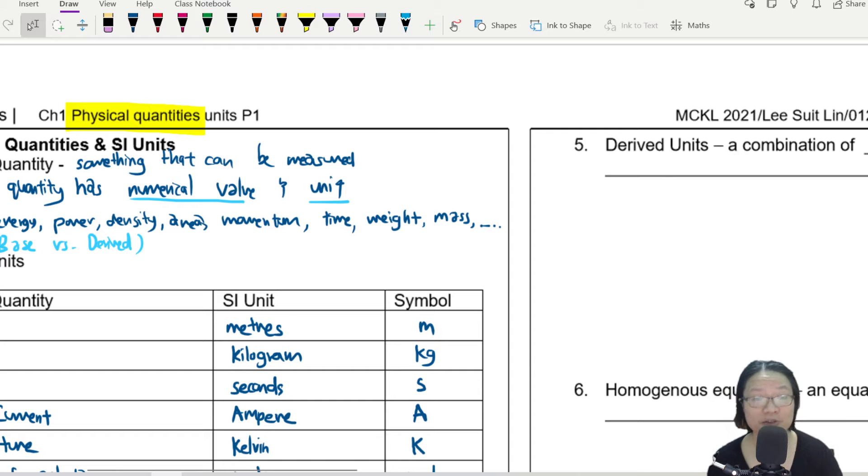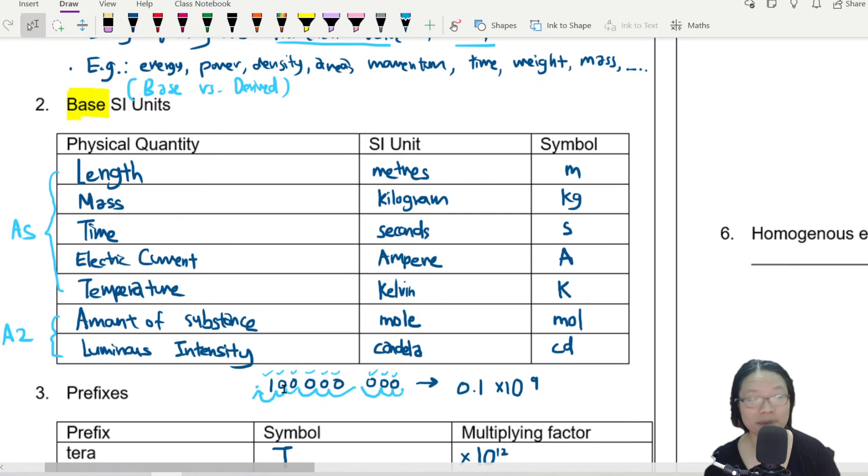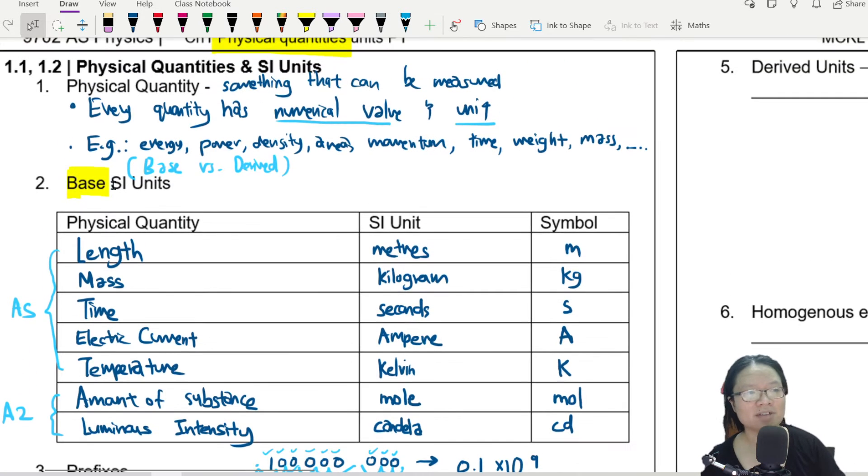So today I'll talk to you about derived units. You already know that in base SI units, you have these seven physical quantities and you might be thinking, teacher, there are other physical qualities with other SI units that I use that is not here. For example, energy, power, density, area, momentum, time, weight, mass, like which one is base and which one is derived.